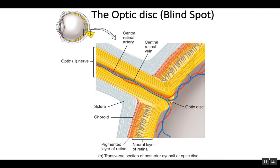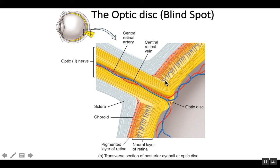This helps us see that the optic disc, where the optic nerve is exiting the eye, lacks photoreceptors. Notice this is all retina — we have the ganglion cells, whose axons form the optic nerve, a bipolar cell layer, and then the rods and cones. There are no rods and cones at the area of the optic disc, so any light rays that enter the eye and hit this area cannot be detected.